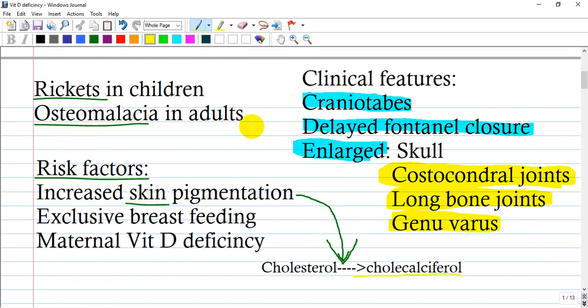For rickets, increased skin pigmentation, especially in Black people. One form of vitamin D is synthesized under the skin from cholesterol to calciferol. Another form is deposited in the liver as 25-hydroxy vitamin D, and a third is the active form called 1,25-dihydroxy vitamin D, activated in the kidney.